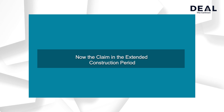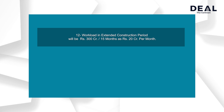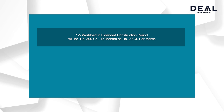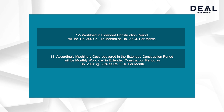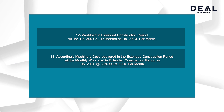Now, the claim in the extended construction period. Workload in the extended construction period will be Rs. 300 crore divided by 15 months, i.e. Rs. 20 crore per month. Accordingly, machinery cost recovered in the extended construction period will be equal to monthly workload in the extended construction period, i.e. Rs. 20 crore at the rate of 30%, which is Rs. 6 crore per month.